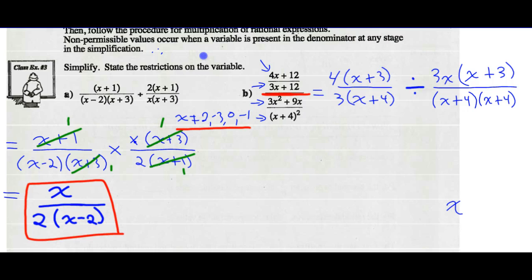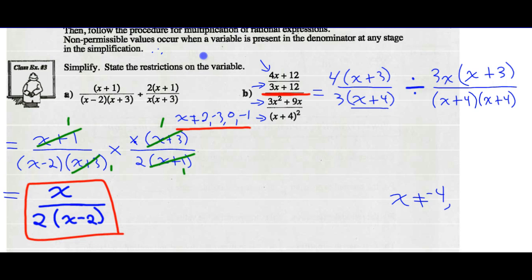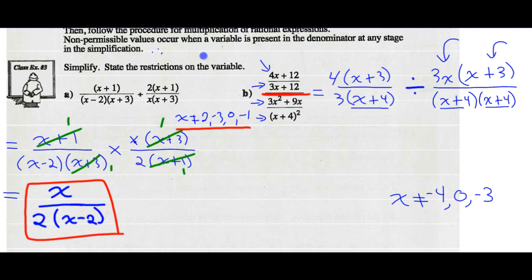From this factored form I state my non-permissible values. Looking at the first denominator, x plus 4 means x cannot equal negative 4. The second and third denominator factors are also x plus 4, so I already have that. I must also look at the numerator of the divisor: 3x cannot equal 0, so x cannot equal 0. And x plus 3 cannot equal 0, so x cannot equal negative 3.